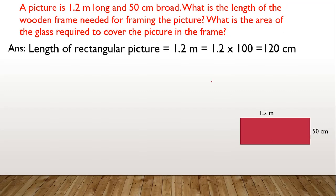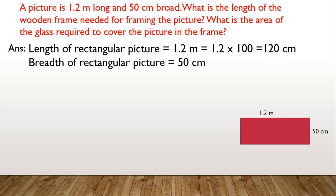We convert 1.2 meter into centimeter by multiplying by 100, giving 120 centimeter. The breadth is already in centimeter, so it stays as 50 centimeter. Now we need to find the wooden frame required for framing the picture, which means we need to find the perimeter of this rectangle.